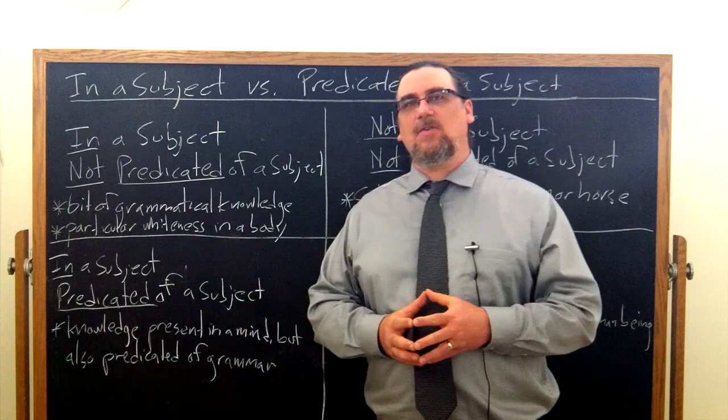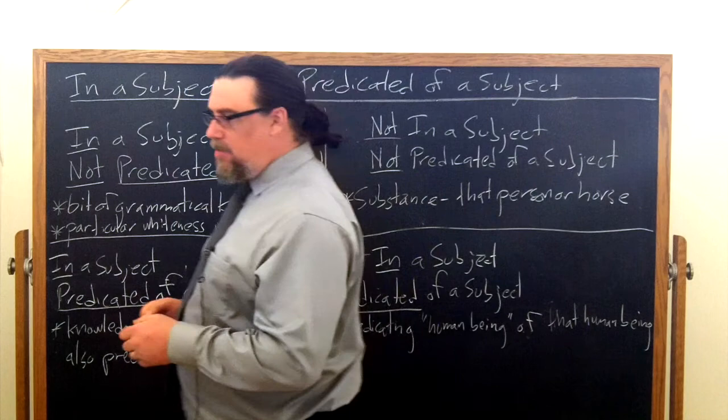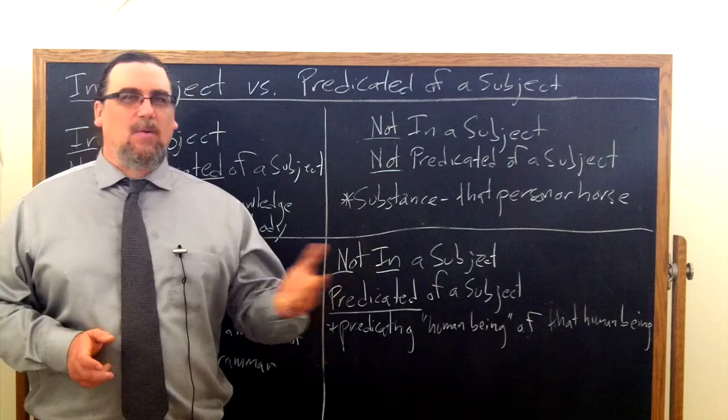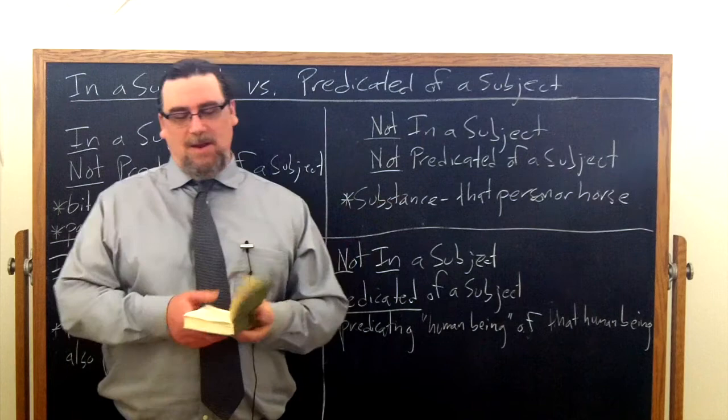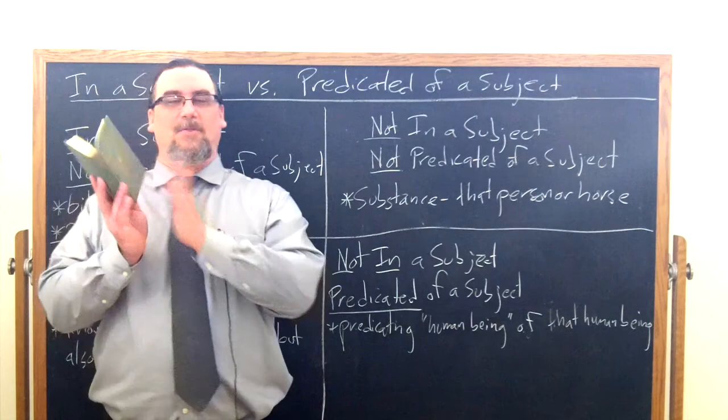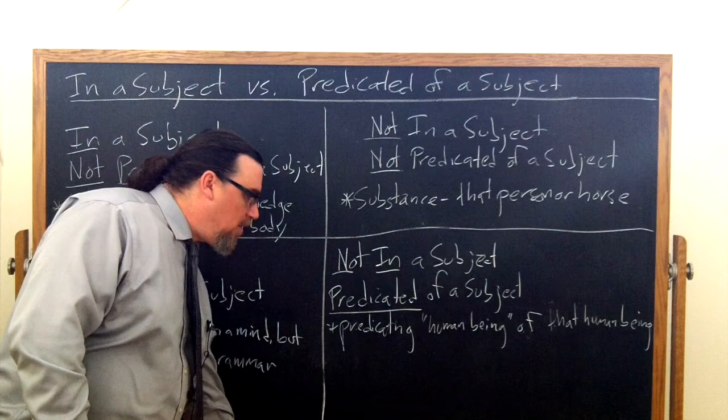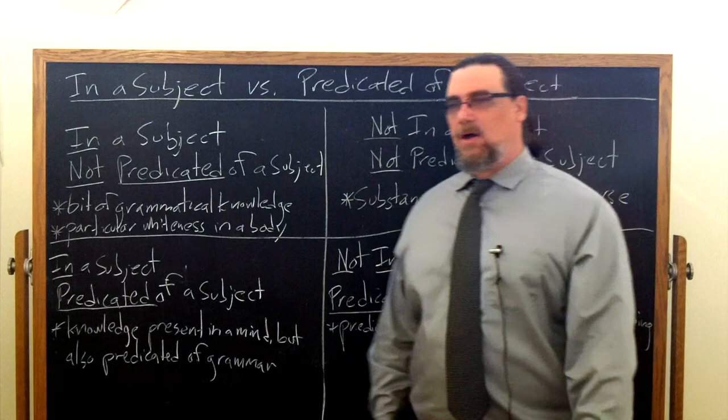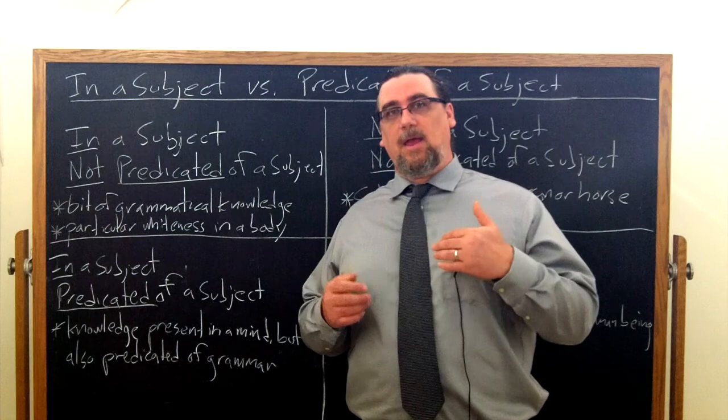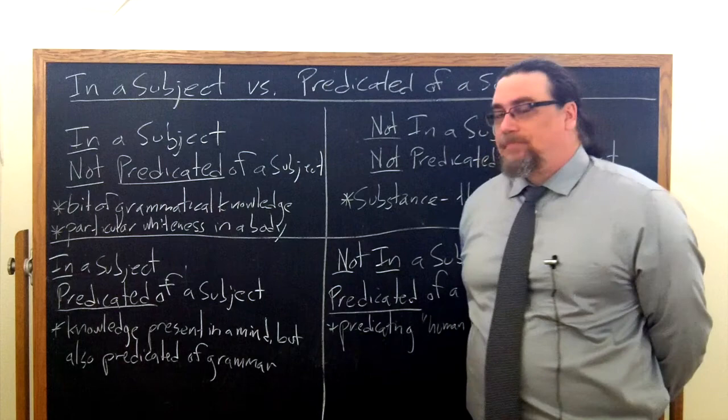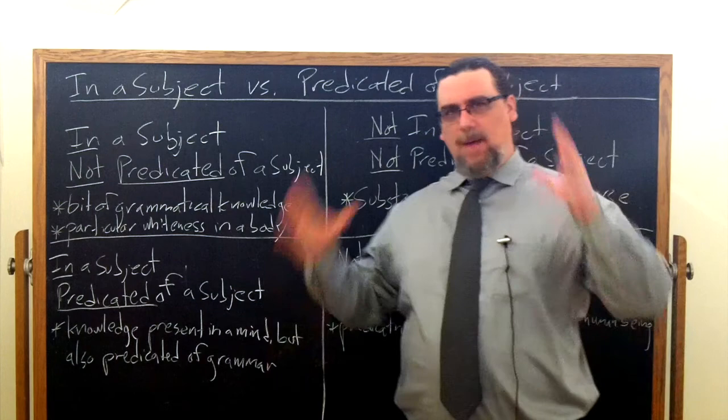So predicated is a little bit easier to start with. Let's actually think about that first. The Greek term here in this work is legatai, from legane, which is the word to say, to say something about something else. So to say that this book is thick or that it is hardbound or that it is green. I mean, it's a funny thing to say it's green, right? Because the book itself, this is the book, is not green, but the outside of the book is green. Or to say that my tie is long or that I am a man or that I am tall or I am middle-aged. These are all what we call predication.